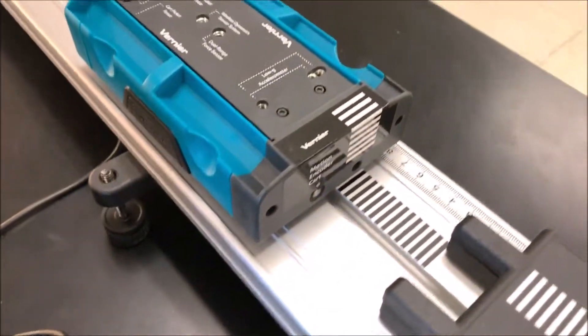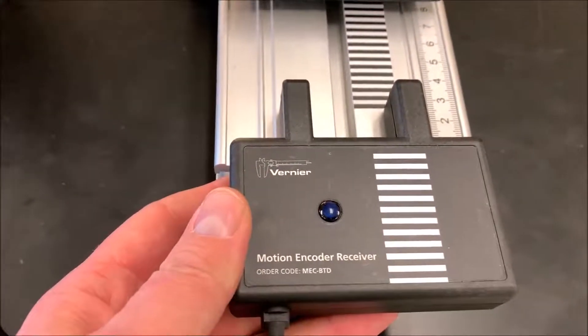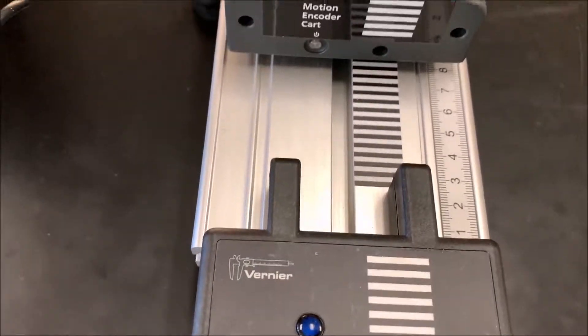Okay, to use the motion encoder cart, you have to do a couple things. First of all, make sure that the motion encoder receiver is on the end with a zero, and you'll know because it's lined up with the stripes.